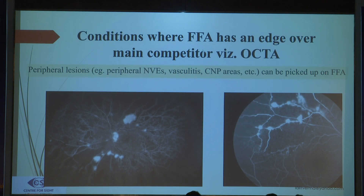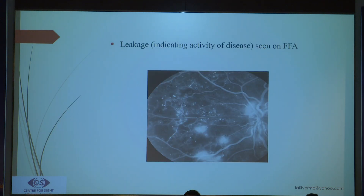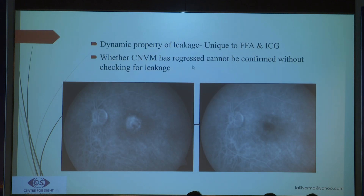Conditions where FFA has an edge over OCTA include peripheral lesions and CNP areas, which may not be easily picked up by conventional OCTA. For peripheral CNVs, patients with eales disease and vascular complications, I will depend on angiography. Leakages are very easily picked up on FFA. For focal laser in diabetic macular edema or CSR, I will always have an angiography done to pick up areas of leakage before treatment. If OCTA reveals CNVM but it may be regressed, in my practice I will definitely depend on FFA to confirm activity.